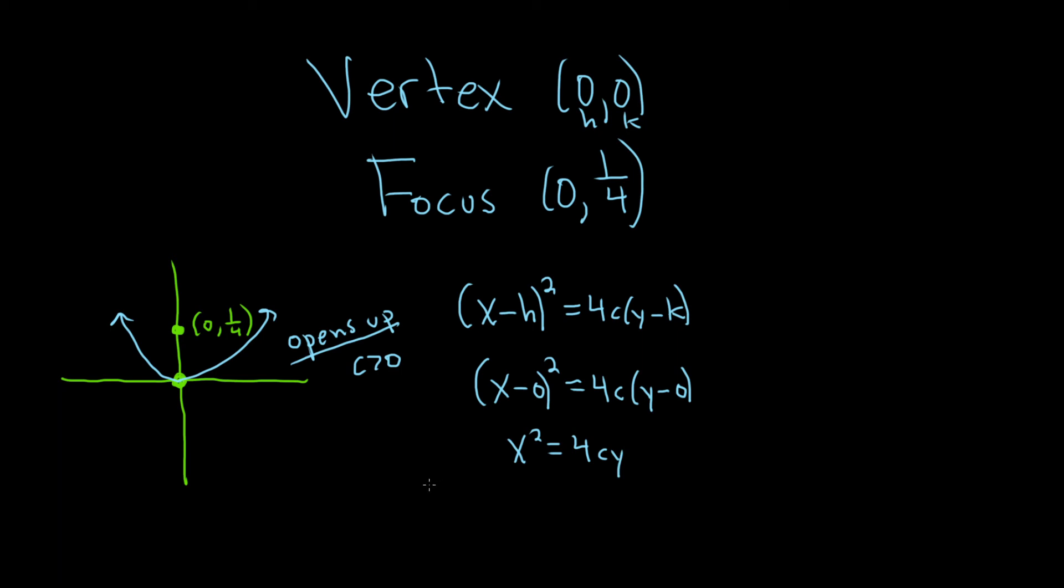The last thing we're missing to finish this problem is to actually find c. The distance between the vertex and the focus is always equal to the absolute value of c. So this distance here is 1/4. Because c is positive, we're just going to have c = 1/4. If instead it had opened down, then c would be negative 1/4.